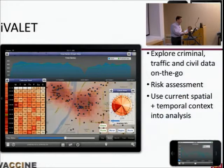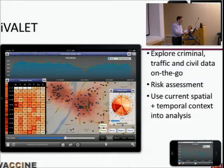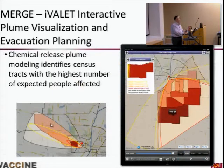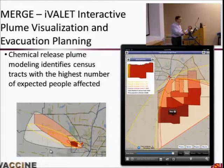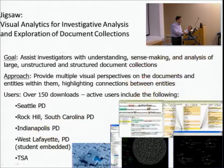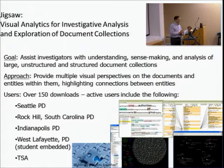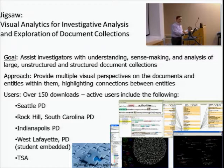We have it running on mobile devices, presenting data differently to show locally and temporally relevant things. We have interactive plume modeling so that if there's a chemical release, you can pull in real-time wind information, see affected areas, pull up census information, and see how many people need to be evacuated. You can also do traditional text analysis for crime and intelligence analysis, such as the Jigsaw system — which John Stasko developed and which is currently being used on three cold case homicides in our county.